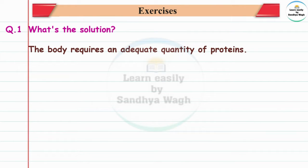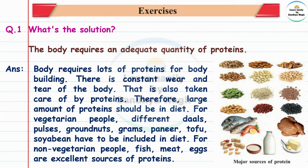Question 1: The body requires an adequate quantity of proteins. The question is that the body needs proteins. Answer: the body requires lots of proteins for body building. There is constant wear and tear of the body.